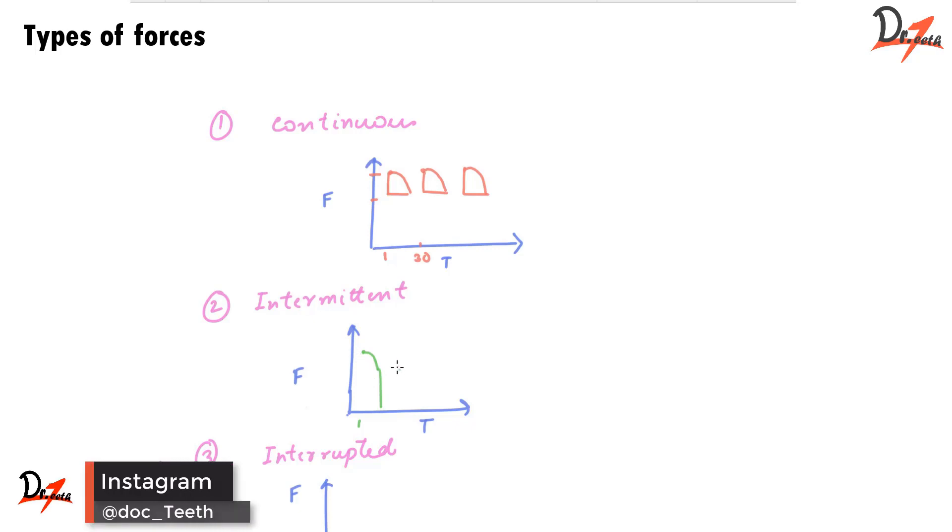So intermittent force, it will decline to zero magnitude when the appliance is removed by the patient. And until it is removed, the force will be there, but the magnitude of force will obviously decrease. So we'll get something like this. Intermittent forces can be seen in the removable appliances, like where you have the lever bows, springs, etc.